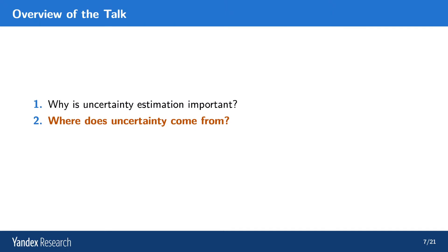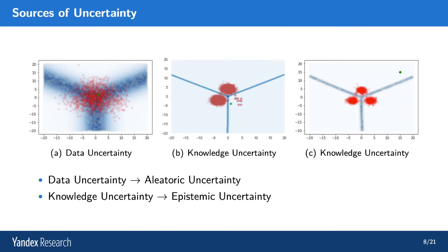Having established that uncertainty is important in order to increase the safety of systems and avoid mistakes, we now have to examine where uncertainty comes from. In general, there are two idealized sources of uncertainty: data uncertainty and knowledge uncertainty. Data uncertainty is often also called aleatoric uncertainty, and knowledge uncertainty is often also called epistemic uncertainty. We'll stick to data and knowledge, because in my opinion these are slightly more clear terms than aleatoric and epistemic.